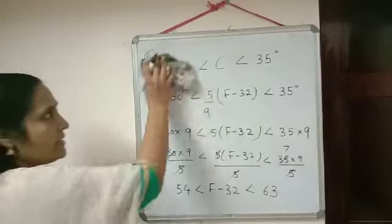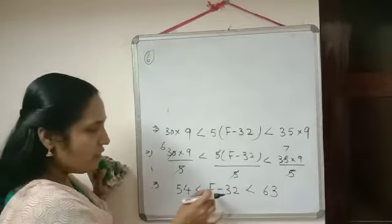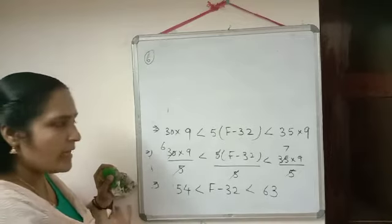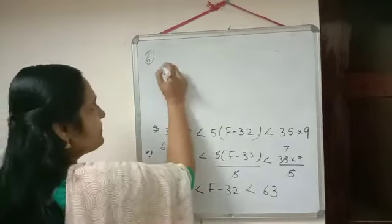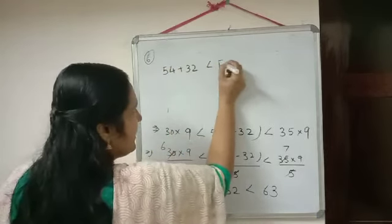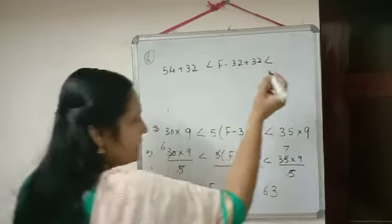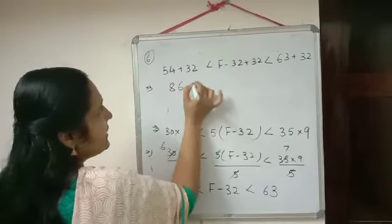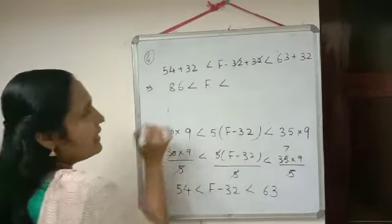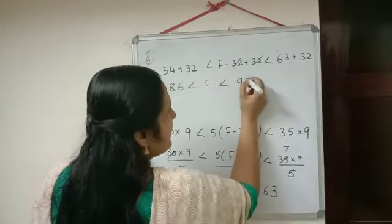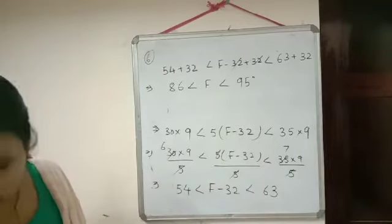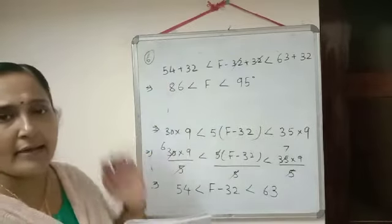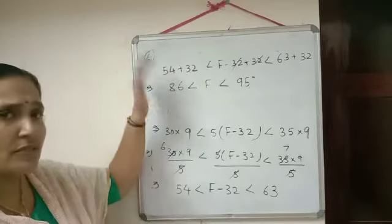We are calculating the range of temperature in degree Fahrenheit. In the middle we want only Fahrenheit, so we add 32 throughout to cancel the minus 32. This gives 86 degrees less than F less than 95 degrees. So the range in Celsius was 30 to 35 degrees and in Fahrenheit it is between 86 degrees and 95 degrees.